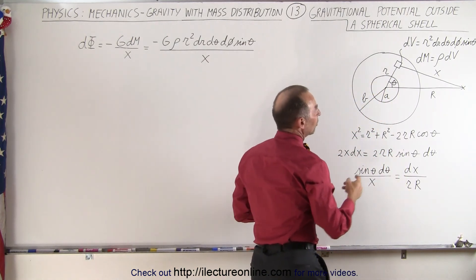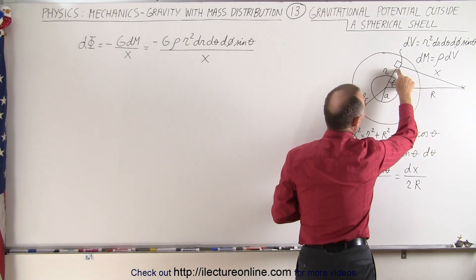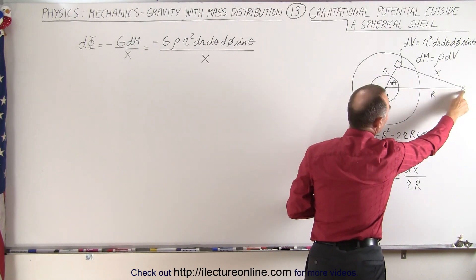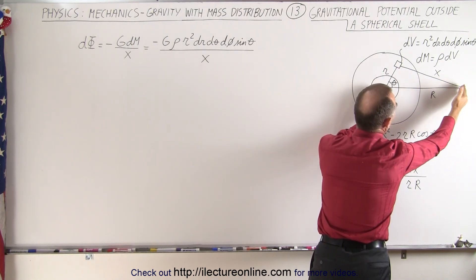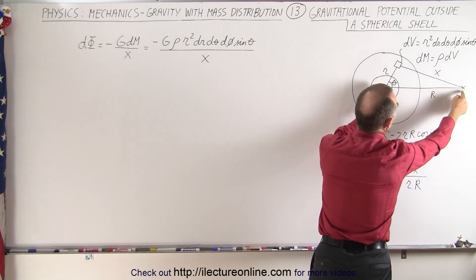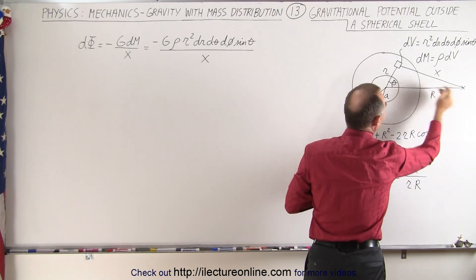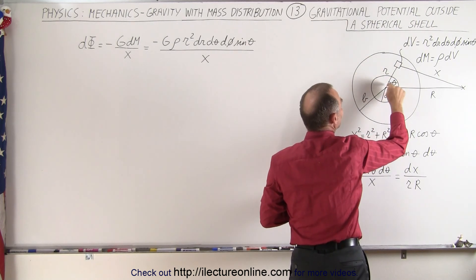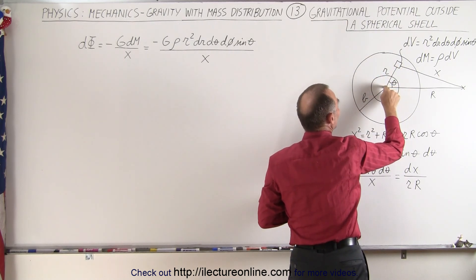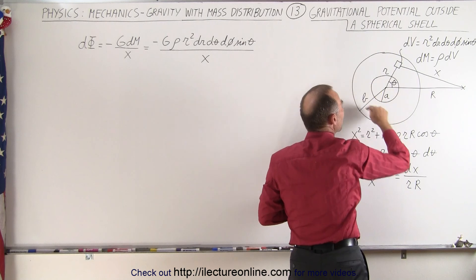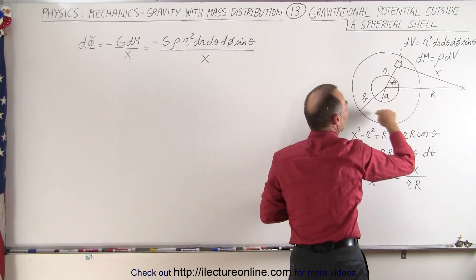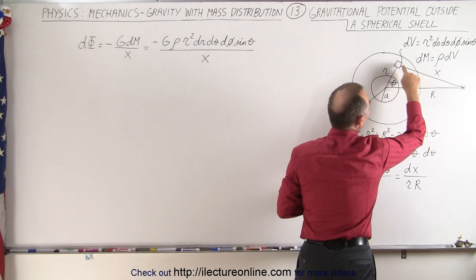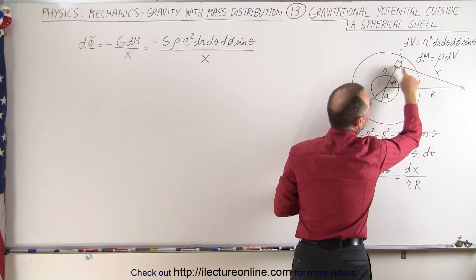To help us out, the distance from that volume element to the location of interest — we're going to pick a fixed distance R. Capital R will be a fixed value, while small r will be a variable indicating the distance from the center to any one of the mass elements of the shell. The distance from that location to the volume element we're going to call x.